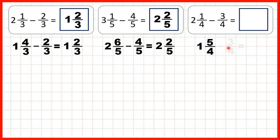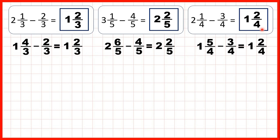But now we can take our three-quarters away. We now have one whole, and five-quarters minus three-quarters is two-quarters, so one and two-quarters is our answer.